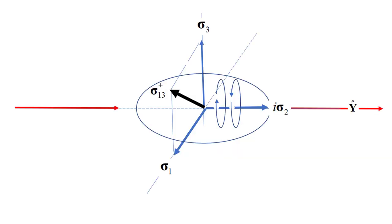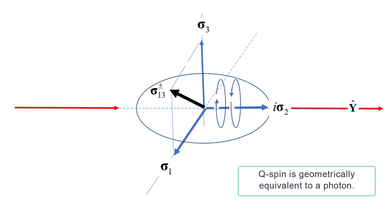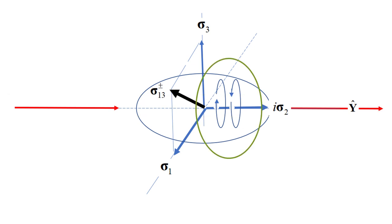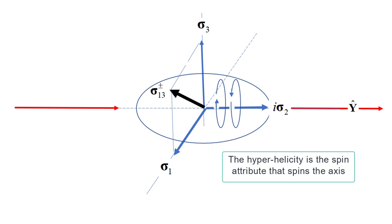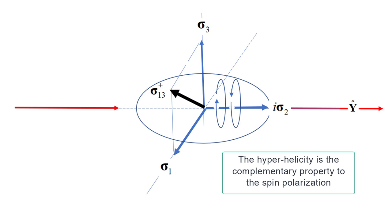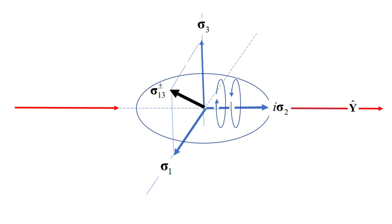Here is a view of q-spin. It is geometrically equivalent to a photon. The axis of linear momentum spins, which is generated by a unit quaternion. The attribute that does the spinning is the hyperholicity, which is observed as the usual helicity that is measured. Hyperholicity is the complementary property to spin polarization. The structure is formed from two orthogonal axes of spin angular momentum seen here. These two components are mirror states, like the matter-antimatter pair Dirac proposed.